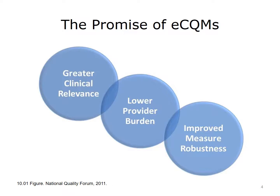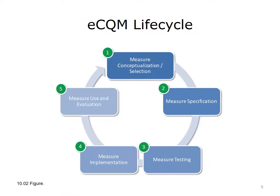Being a completely electronic system, eCQMs can scale significantly, as quality measurement is a byproduct of data captured for care delivery. Quality measures, regardless of type, generally follow a life cycle depicted in this diagram. The eCQM life cycle is generally similar to other types of quality measures at a high level; however, they differ significantly in how eCQM specifications are developed, tested, and implemented. This is discussed in more detail in the next several slides.